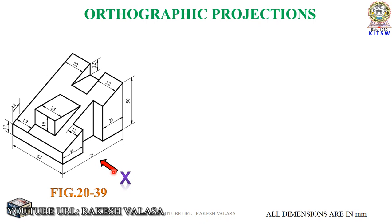If you identify the front view, you can simply identify the top view and side view. For this object, the side view is on the left side for the observer. So for this object, it has a left side view, and you need to draw this left side view to the right side of the front view.